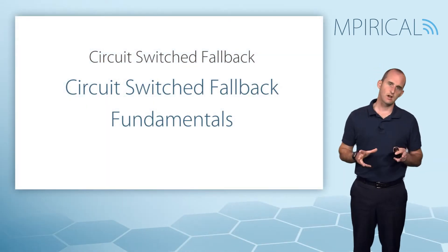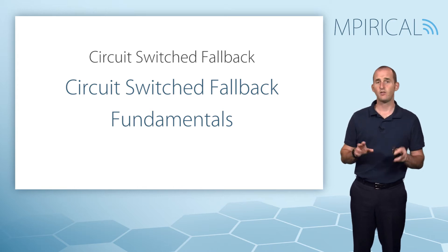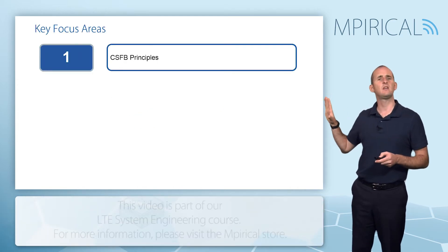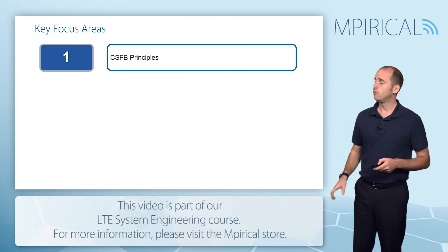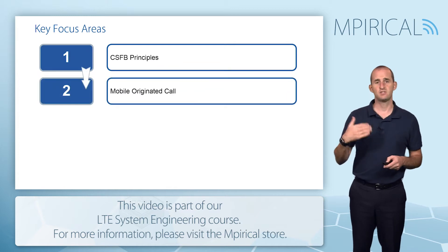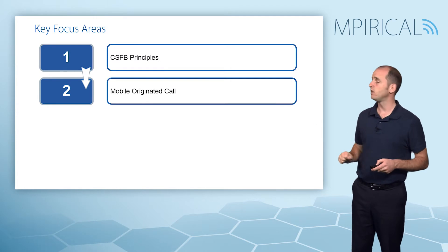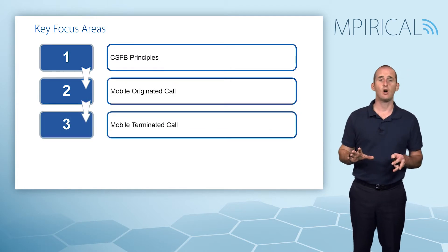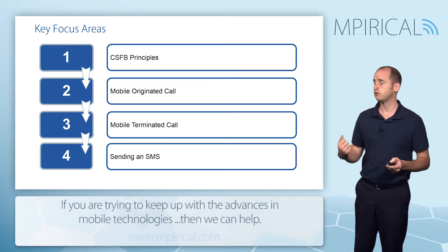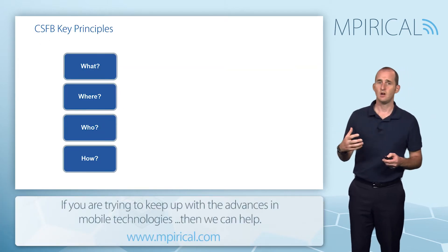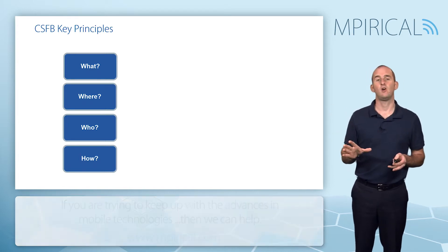This session is going to look at some of the fundamentals behind circuit switch fallback. There are four main areas we're going to cover, starting off with some of the basic principles behind circuit switch fallback, before we take a procedural level look at circuit switch fallback, including mobile originated calls, mobile terminated calls, and also some basic SMS procedures. We're going to talk about the what, the where, the who, and the how of circuit switch fallback.